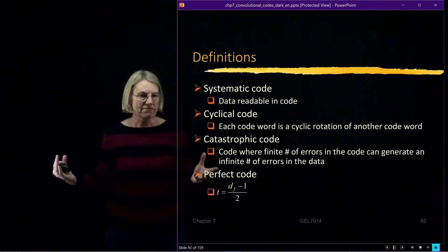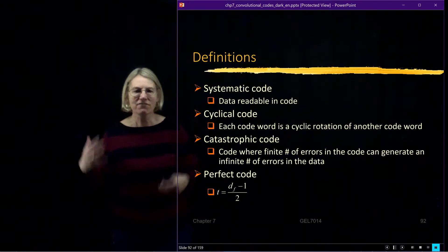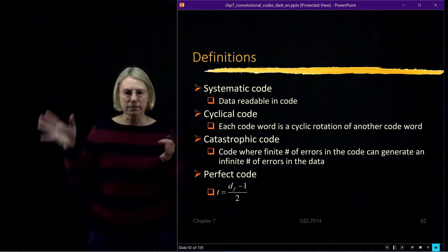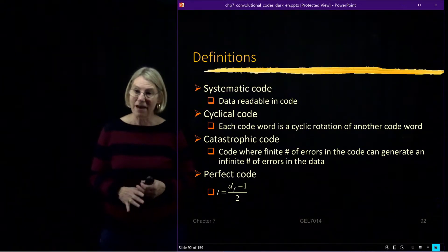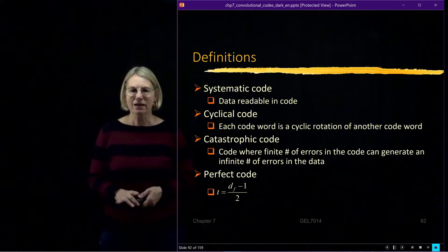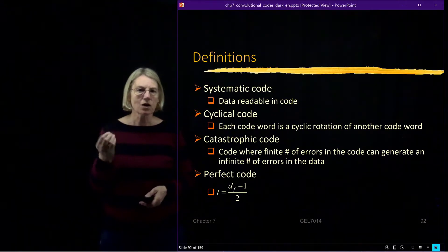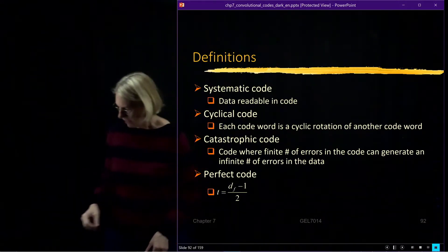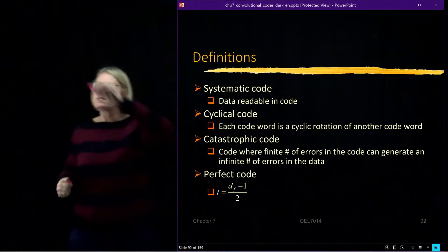Now let's throw some definitions at you from the code world. There are different kinds of codes. You can divide them into different characteristics. Some codes are what we call systematic codes. Systematic codes are codes where you can actually read the data right inside of the code. I like to use that for block codes. It's a little easier.